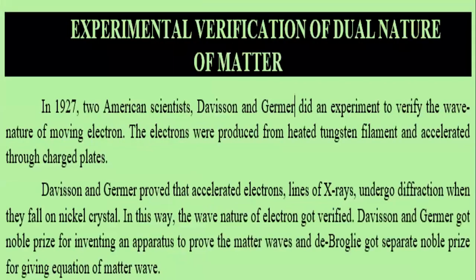Two scientists performed an experiment and proved the dual nature of matter. In their experiment, electrons were produced from a tungsten filament and accelerated particles were directed toward a target — these electrons showed diffraction. Since diffraction is a property of waves, the wave nature of particles was verified. Particles that diffract behave like waves, and this experiment earned a Nobel Prize.